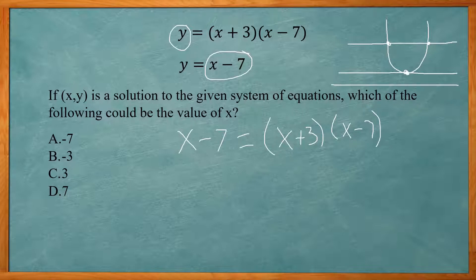Now you might be tempted to divide both sides by (x − 7) to cancel them. But you'd end up with just one x value and only one solution — for the case where the line hits the parabola twice, you won't get both points.